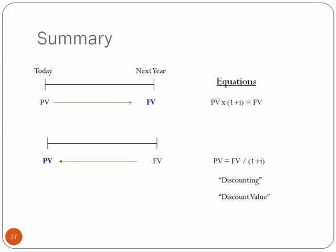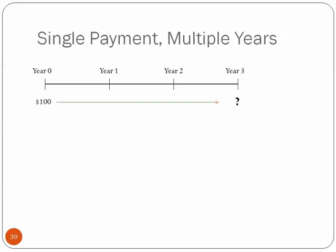All right, so now, these were for single payments, just one year apart. So let's extend this a little. And now let's look at single payments over multiple years, spread out over multiple years. So let's say we have our $100, and this is in year zero. It's today. And I want to know, how much is this worth in three years? So the previous examples would have been this one year. And I want to say in this example now, let's go out three years.